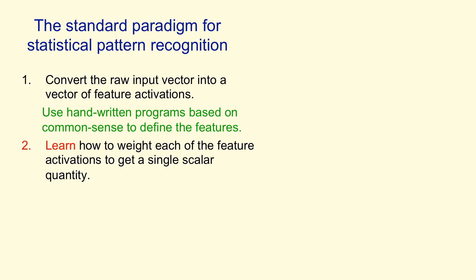What we learn is how to weight each of the feature activations in order to get a single scalar quantity. So the weights on the features represent how much evidence the feature gives you in favor or against the hypothesis that the current input is an example of the kind of pattern you want to recognize. And when we add up all the weighted features, we get a sort of total evidence in favor of the hypothesis.